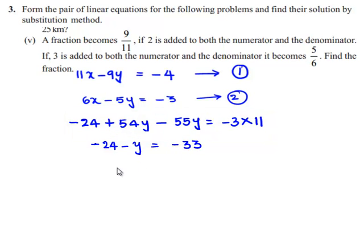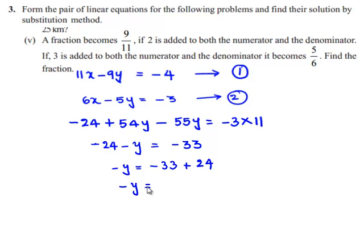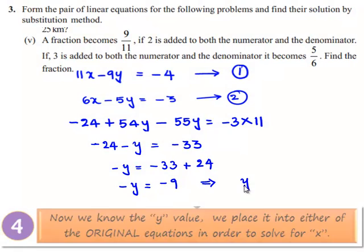Transposing minus 24 to the right hand side, we get minus y is equal to minus 33 plus 24. Therefore, minus y is equal to minus 9, which gives y is equal to 9.